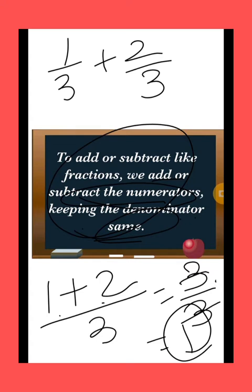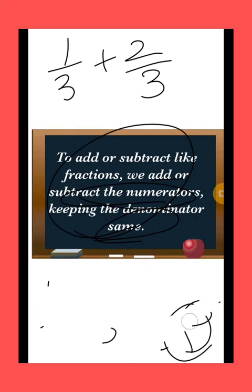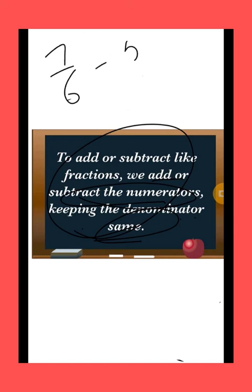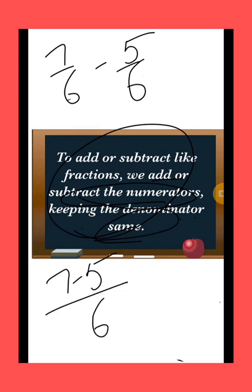Now see one example for subtraction also. For example, 7 by 6 minus 5 by 6. So first of all, subtract the numerators, that is 7 minus 5, and keep the denominator same which is 6. 7 minus 5 is equal to 2 by 6. So your answer will be 2 by 6.